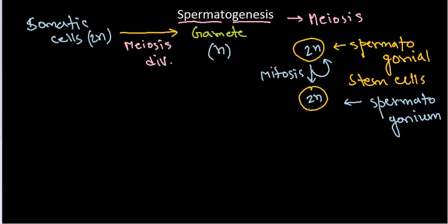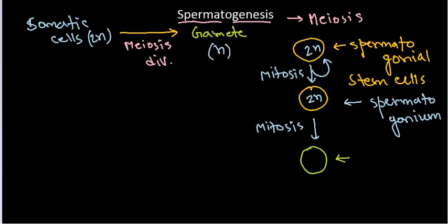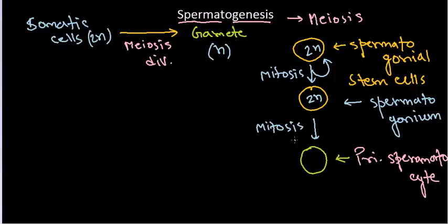From the spermatogonium cells, they pass through another mitotic division. From this, they produce another cell type called primary spermatocyte. This primary spermatocyte cell is produced from spermatogonium via mitosis, and it also consists of 2n number of chromosomes because it's mitosis.